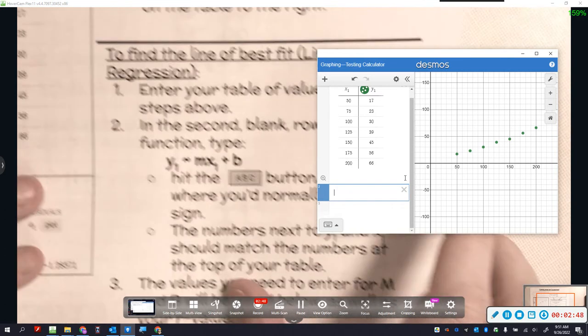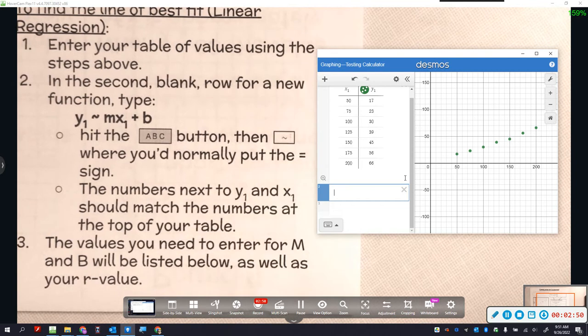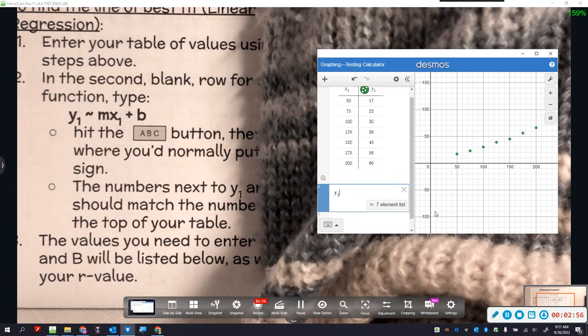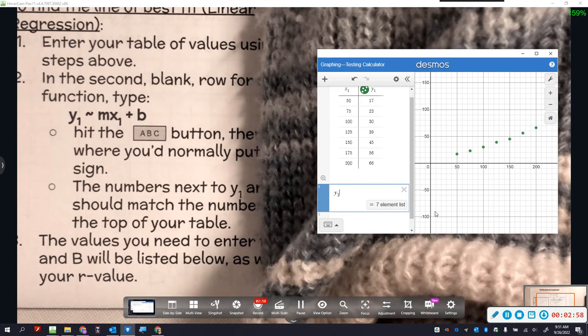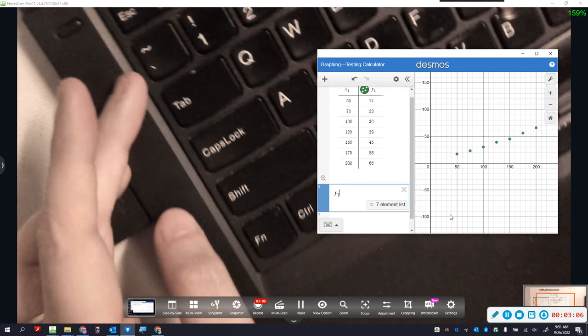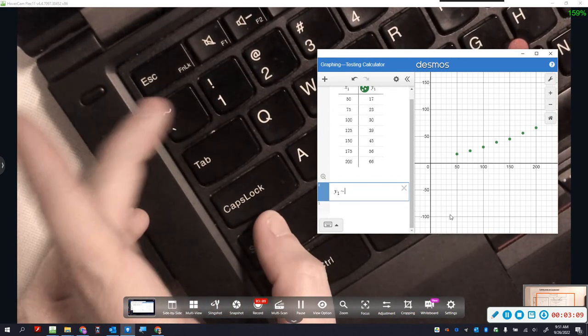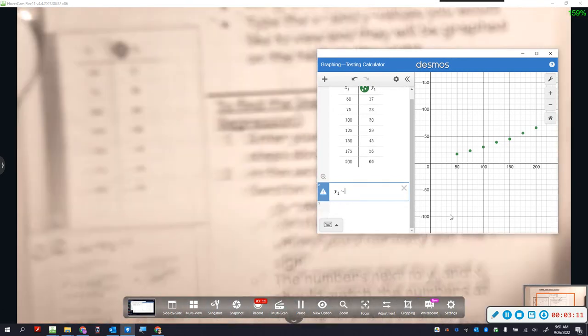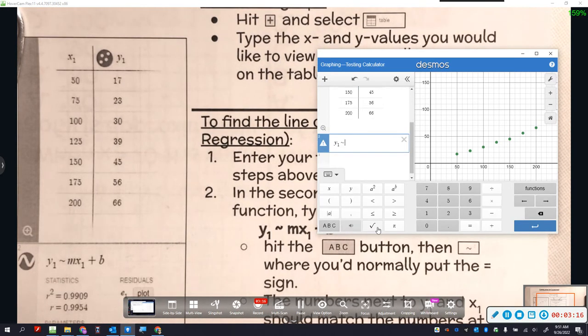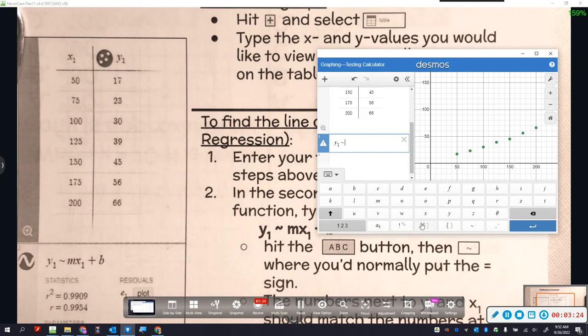I'm going to show you what you would type in to make that happen. This is really important. This is on the notes. You've entered them. You're going to go to a blank row and type Y1. Notice when I write Y1, it automatically makes it a subscript. Now you're going to use the tilde key, which on your keyboard, on my keyboard, it's right here. It's like shift and the button above tab.